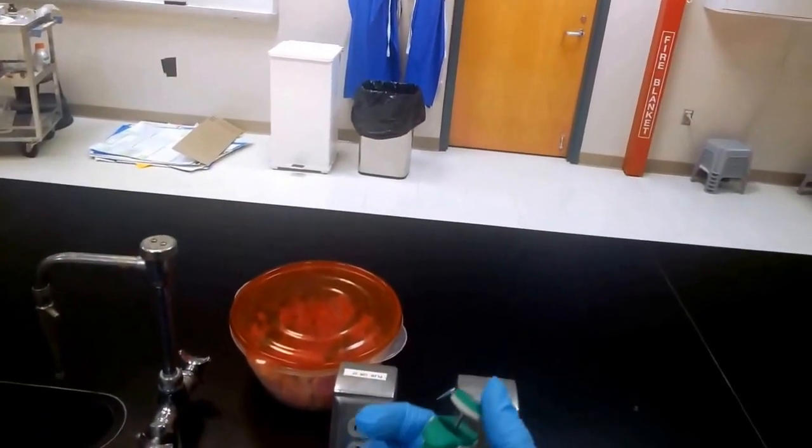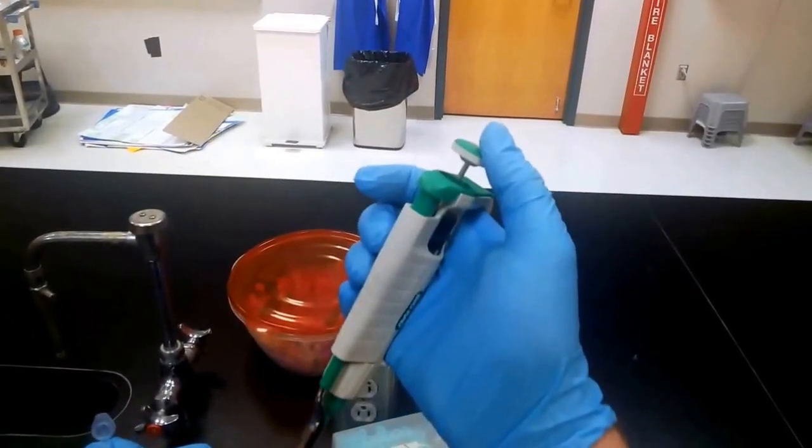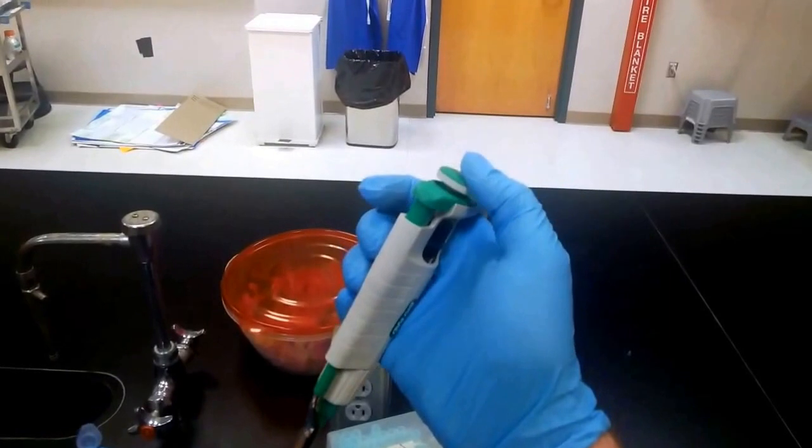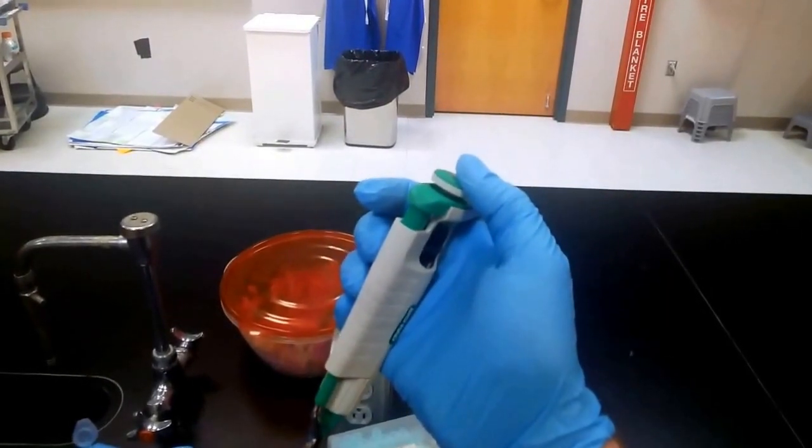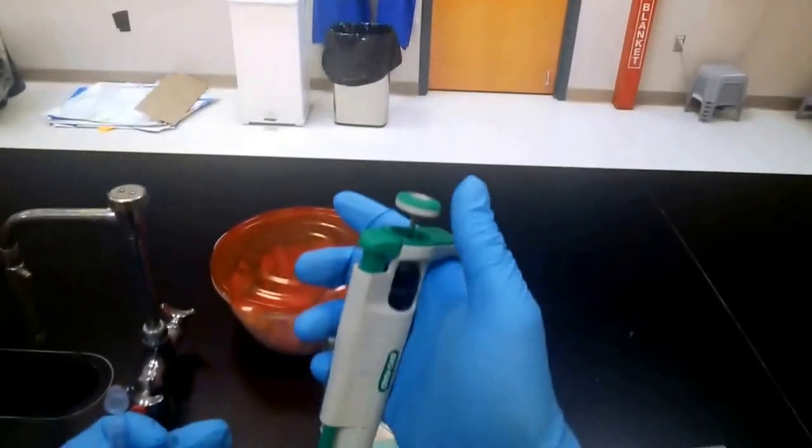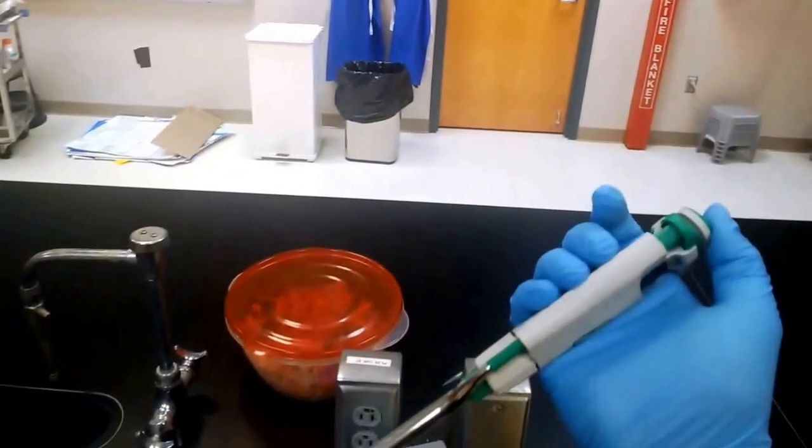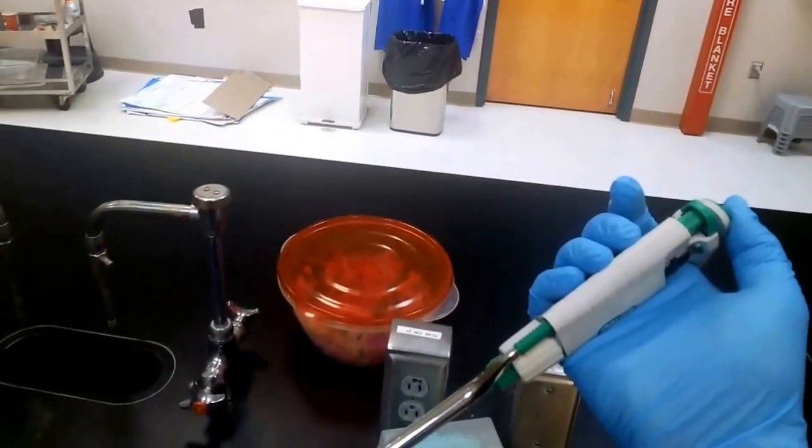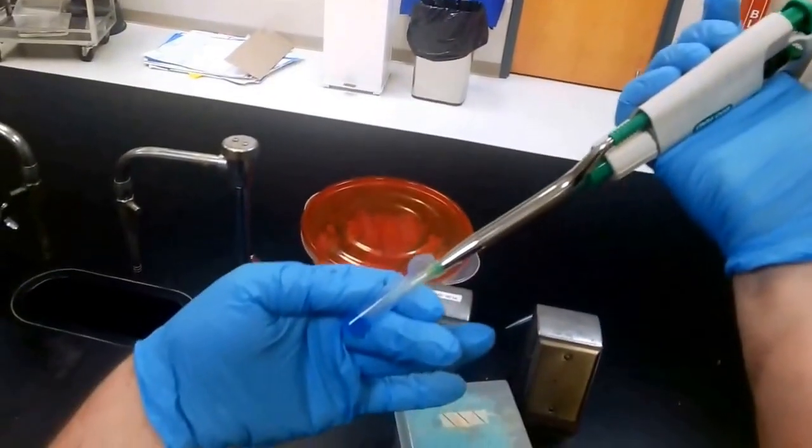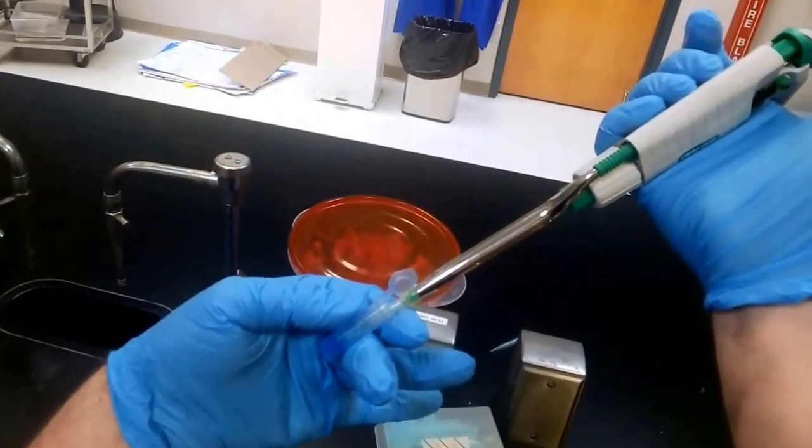And we will now use the button to extract 75 microliters. Now the button has actually two stops—there is one stop if you just press down, but there's a second stop. The correct measurement is acquired by pushing the button down to the first stop, then we will dip the tip into the solution that we're moving and slowly pull up.